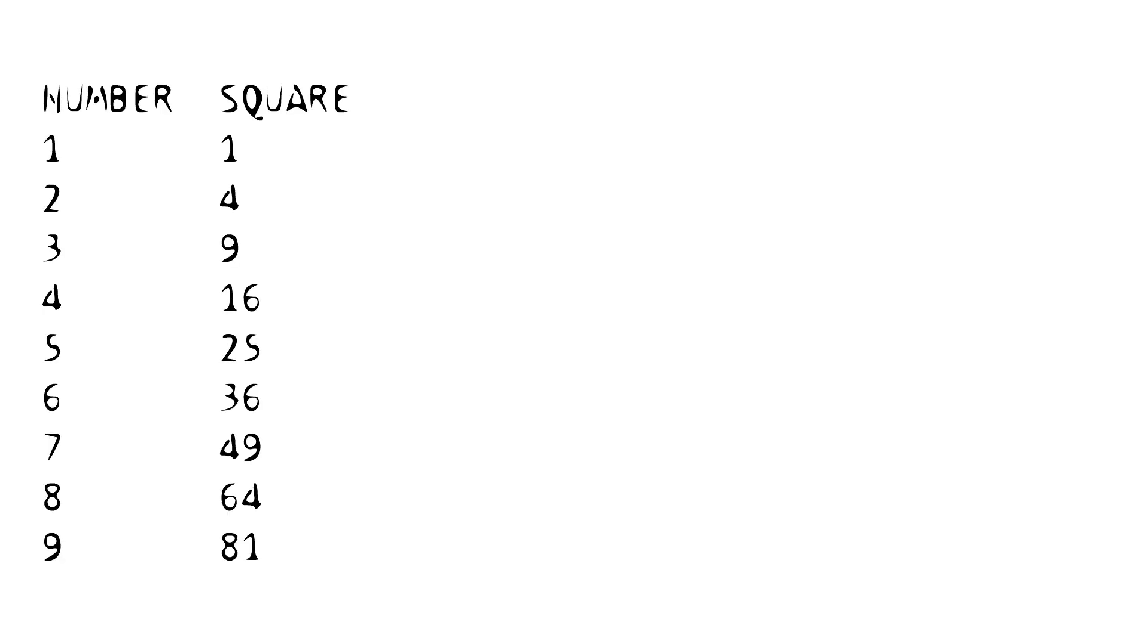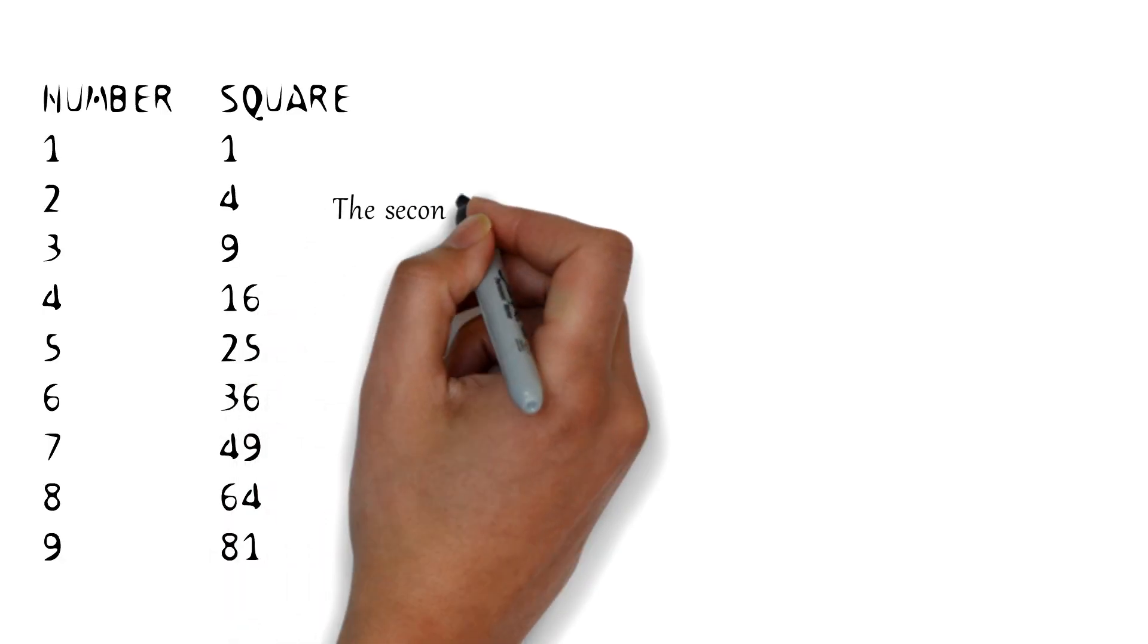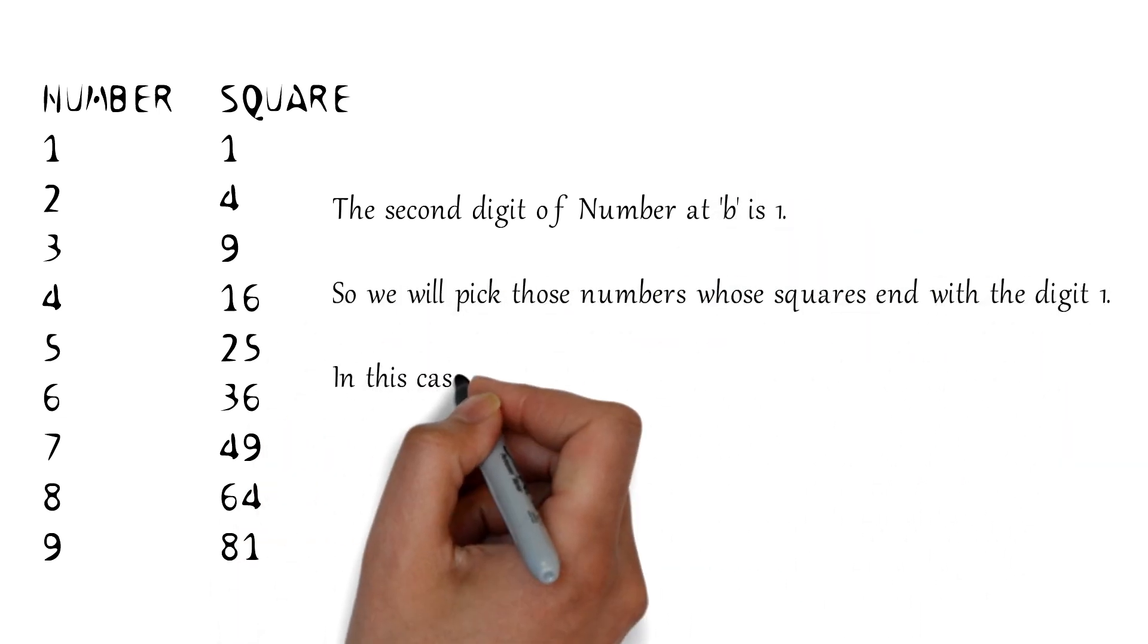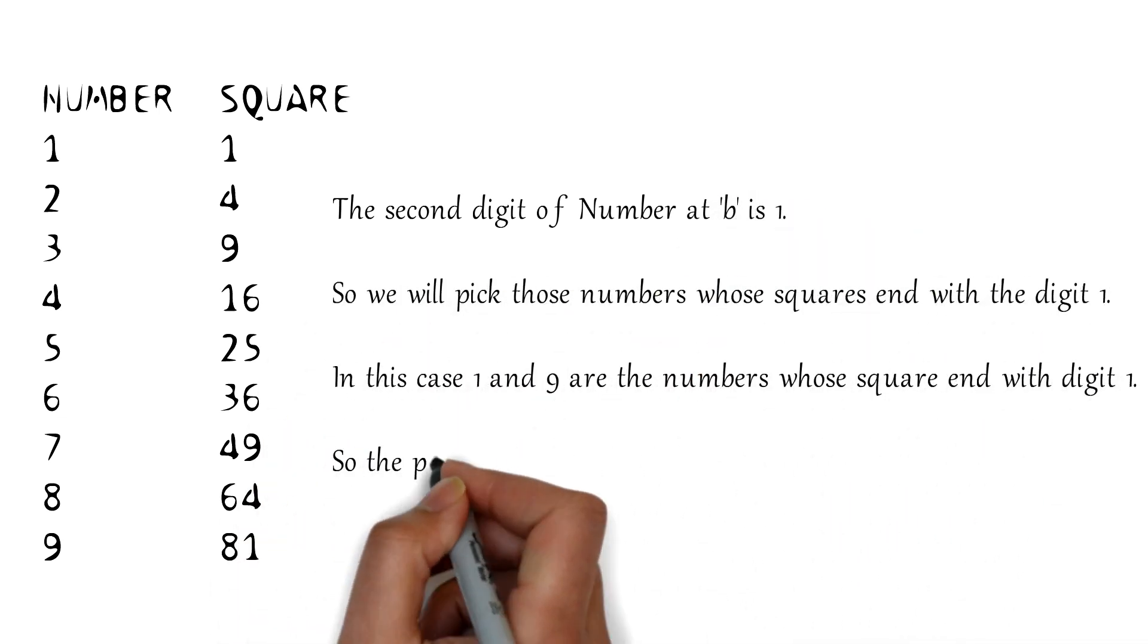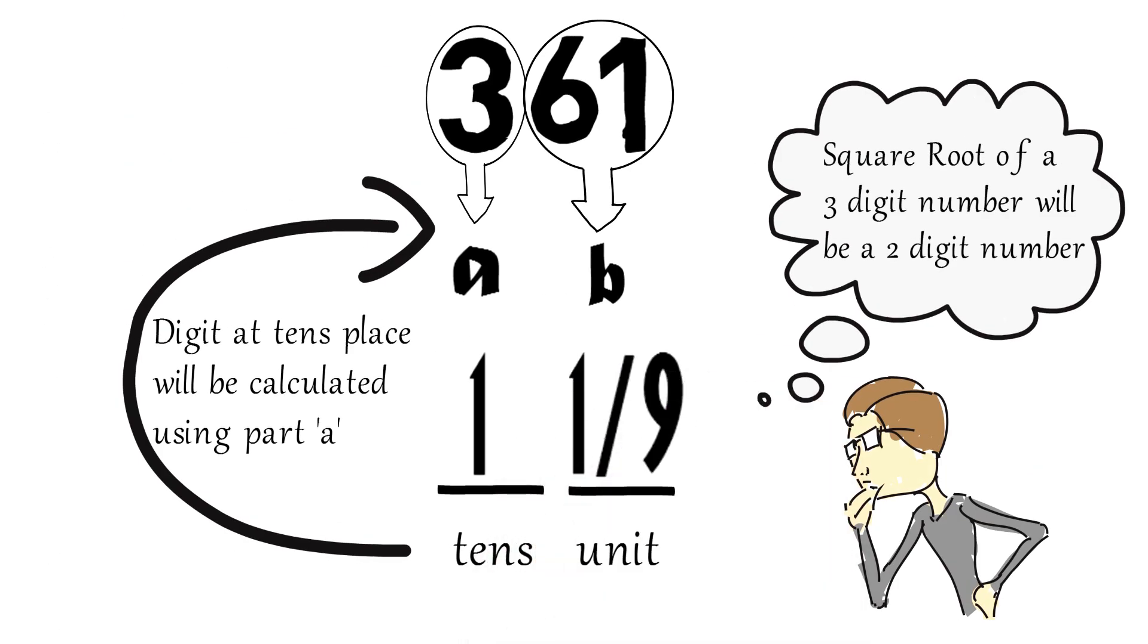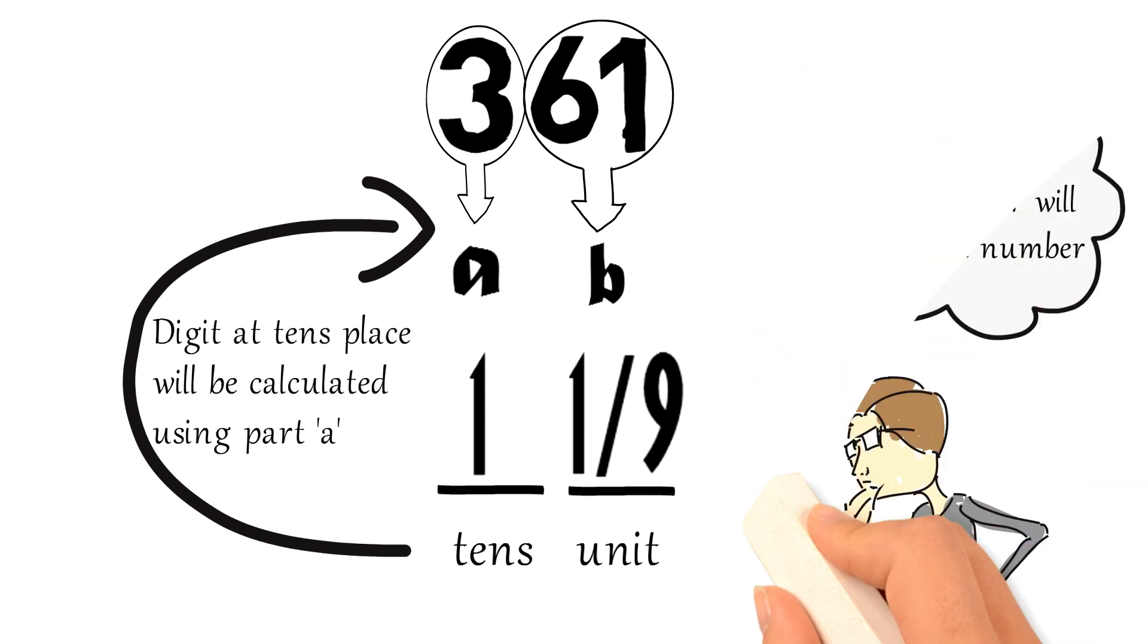For the number at units place, the possible options are the numbers whose square has the same last digit as the second digit of number b. In this list, we'll see which numbers have their square ending with the number 1. We get 1 and 9 as multiple options for the units place.